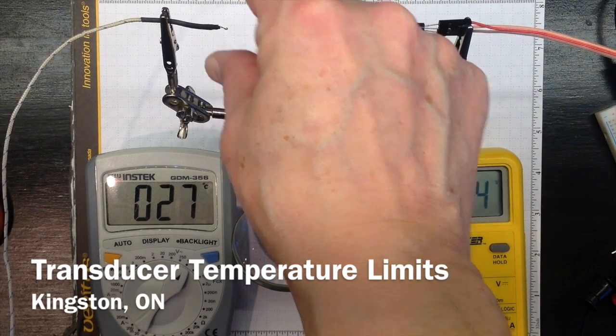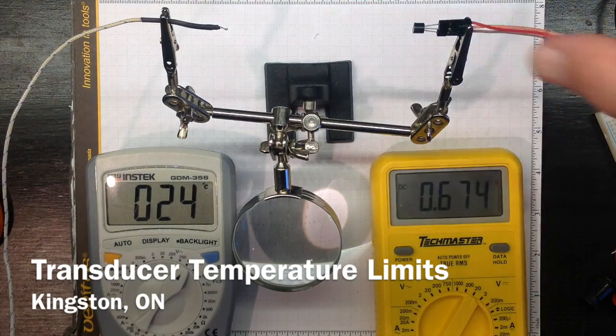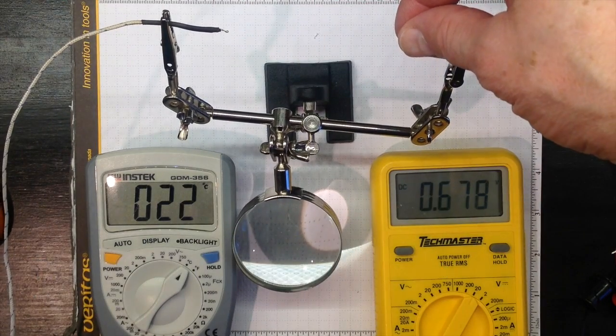The thermocouple responds quickly. The IC sensor responds more slowly to changes in temperature.